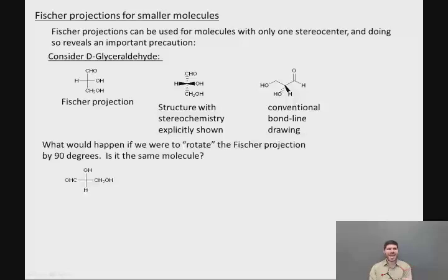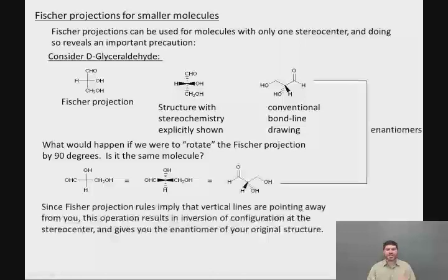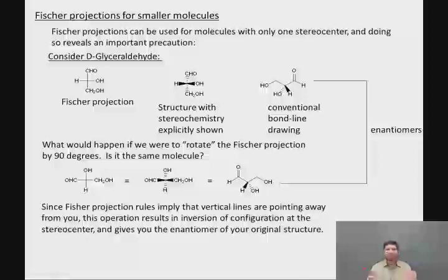The next question is: what would happen if we were to rotate this Fischer projection by 90 degrees? Is it the same molecule? Here's the Fischer projection rotated 90 degrees counterclockwise — we've now got the OH on top, the aldehyde on the left, the CH2OH on the right, and the H on the bottom. Drawing this using dashes and wedges requires the following: the two things on the left and right get wedges, and the two things on the top and bottom get dashes, because Fischer projection rules imply that the vertical lines are pointing away from you. As a result, this operation actually results in inversion of configuration at the stereocenter and gives you the enantiomer of your original structure.